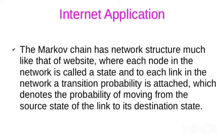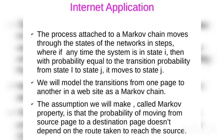Let's see about internet applications. The Markov Chain has a network structure much like that of a website, where each node in the network is called a state, and to each link in the network a transition probability is attached, which denotes the probability of moving from the source state of the link to its destination state. The process attached to a Markov Chain moves through the states of the network in steps, where at any time the system is in state i, then with probability equal to the transition probability from state i to state j, it moves to state j.